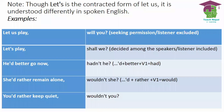Now, 'let's' is the contracted form of 'let us' and is understood differently in spoken English. 'Let us play, will you?' means seeking permission — the listener is excluded. But 'Let's play, shall we?' means the speaker is making an offer or suggestion, and both speaker and listener are included.